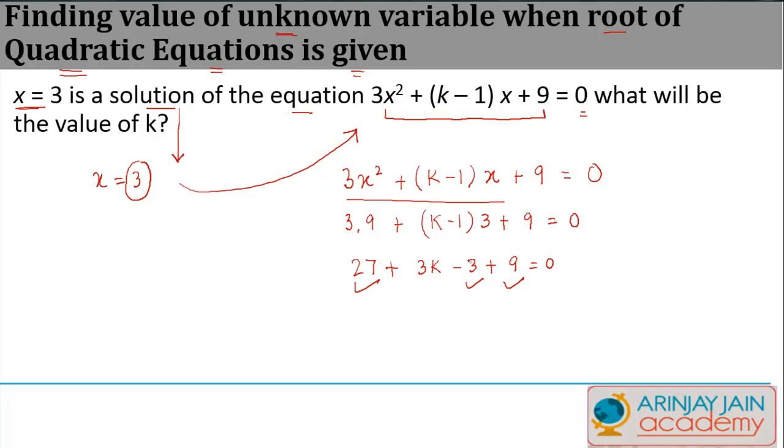If I solve this, 27 + 9 gives me 36, minus 3 gives me 33. In other words, 3k + 33 = 0, which gives me 3k = -33.